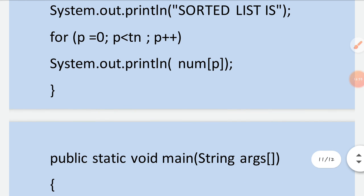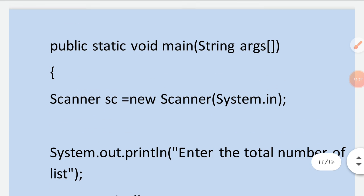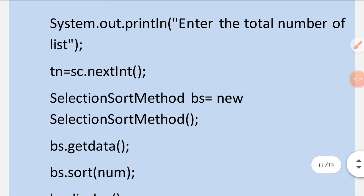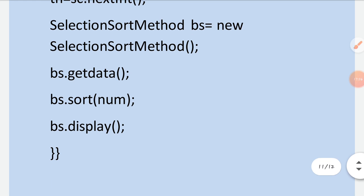This was all about bubble sort and selection sort. In the main method we enter the total number of elements, create the object, and call the methods. This covers all the programs of sorting in arrays using bubble sort and selection sort techniques. I hope it is clear from this explanation. If there is any doubt, you can ask me in the WhatsApp group. Thank you.